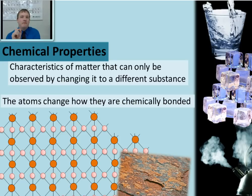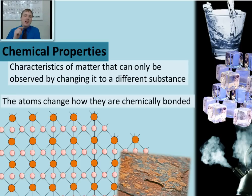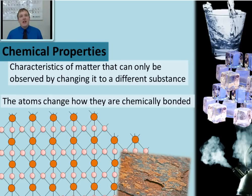To recap: a physical change is a change to the physical properties of a substance, and it's one in which you can change something about a substance without changing it to an entirely different substance. Physical properties can be observed simply by observing the substance and not changing it to something different. A chemical property, on the other hand, can only be observed by changing the chemical bonds between the atoms. And a chemical change occurs when those bonds actually do change and one substance becomes an entirely different new substance.